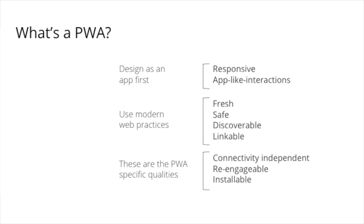The next set of four pillars sound quite exotic and interesting but they're really just modern web practices. Things like being 'fresh' means you can continuously deliver updates to users when deploying web applications. 'Safe' just means having correct transport layer security in place. 'Discoverable' means everything can be accessed through a browser, and 'linkable' means using URL routing so the application can be accessed through URLs.